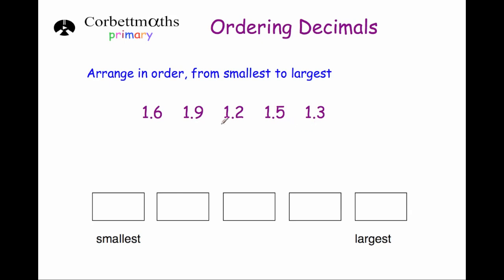If we look at the numbers, all of them have got a 1 in the units column. So that means we're going to have to move across to the next column to see which ones are smallest and largest. In the tenths column we've got 6, 9, 2, 5 and 3.